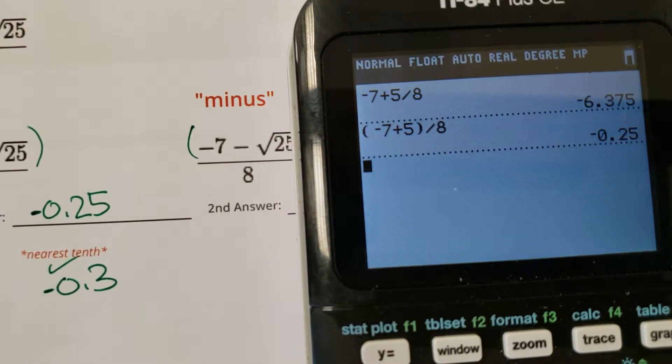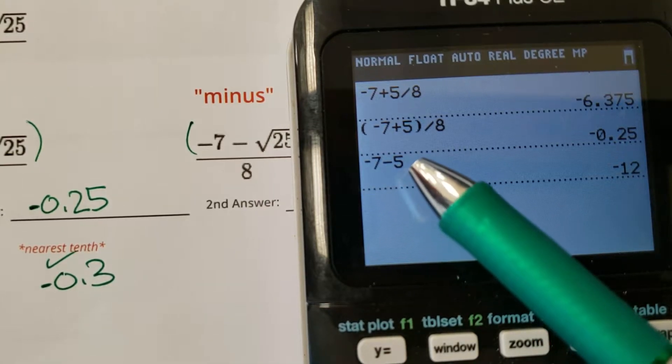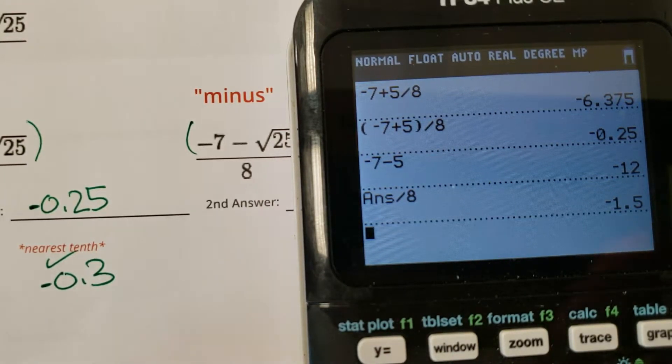Okay. So the only difference between this one and the next one is negative seven minus five. Enter to make sure I do that first. And then I can divide by eight. Okay. Ooh, negative 1.5. Okay.